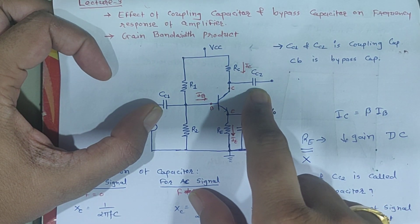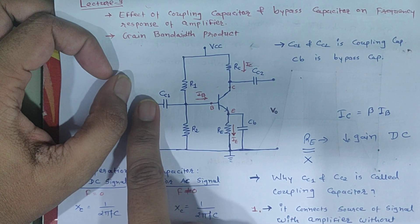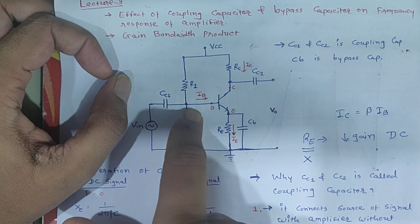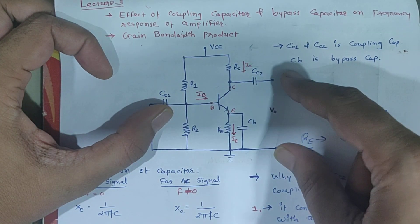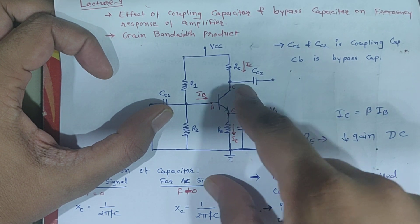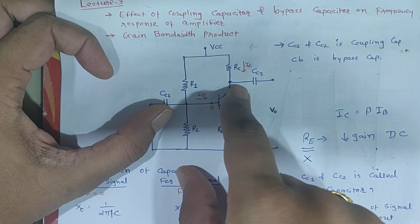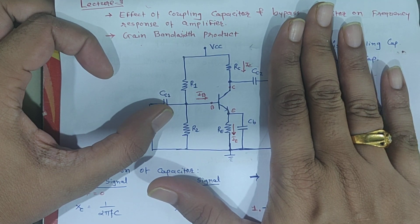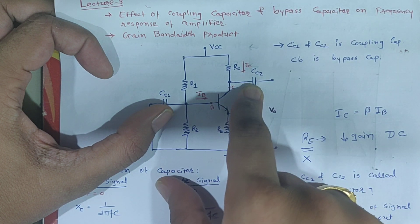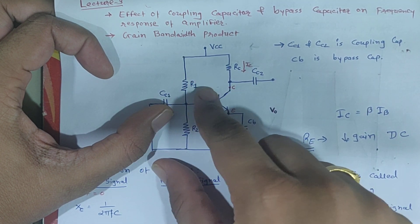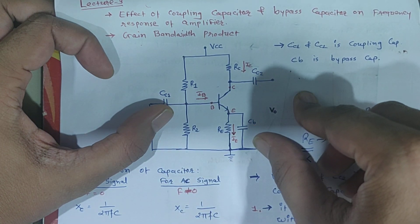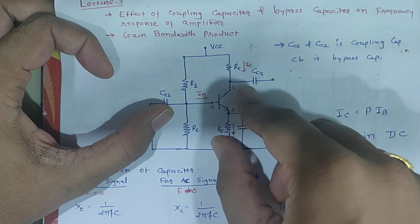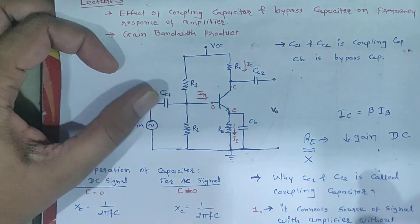To summarize the coupling capacitor: it connects the source to the amplifier and blocks any DC from entering. At the output, it passes only AC and blocks DC. If a second cascade stage is connected, the capacitor also isolates the DC portion between the two stages so that the DC voltage of one stage does not interfere with the other.